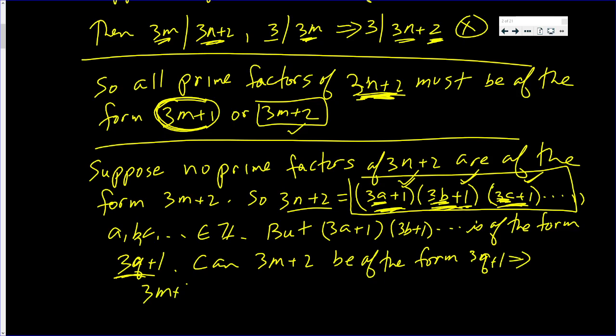Because if 3m plus 2 is equal to 3q plus 1, that would imply, factoring out the 3, that 3 times (q minus m) is 2 minus 1 or 1. But that's absurd. This is a multiple of 3 and this is not.